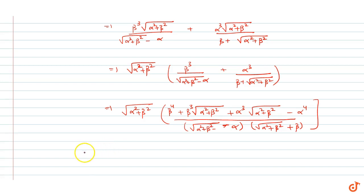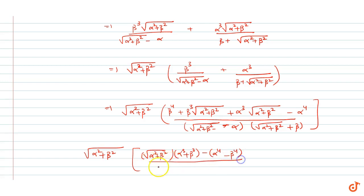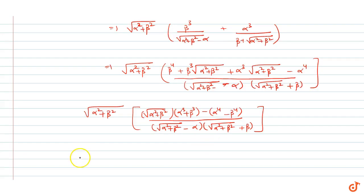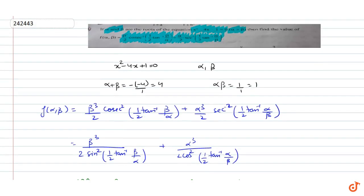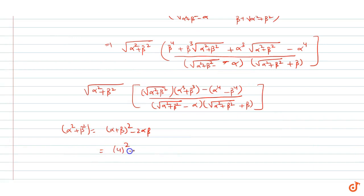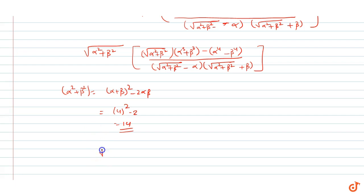Now simplifying: α² + β² = (α + β)² - 2αβ = 16 - 2 = 14, so √(α²+β²) = √14. Also α - β = √((α+β)² - 4αβ) = √(16 - 4) = √12. The numerator becomes √14·√14·(α³+β³) - (α⁴-β⁴). Using α³+β³ = (α+β)(α²+β²-αβ) = 4·13 = 52, and α⁴-β⁴ = (α²+β²)(α²-β²) = 14·(α-β)(α+β).